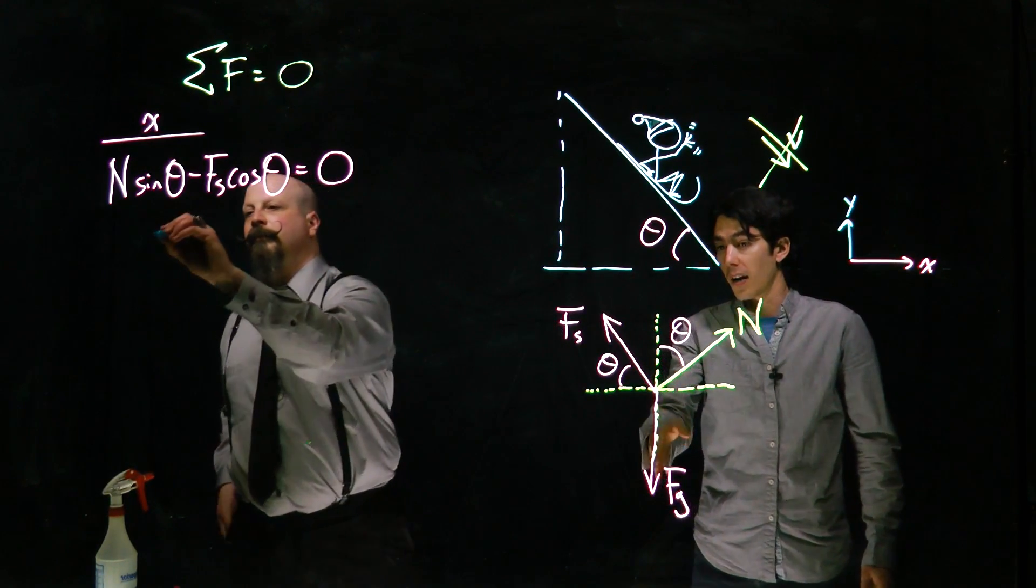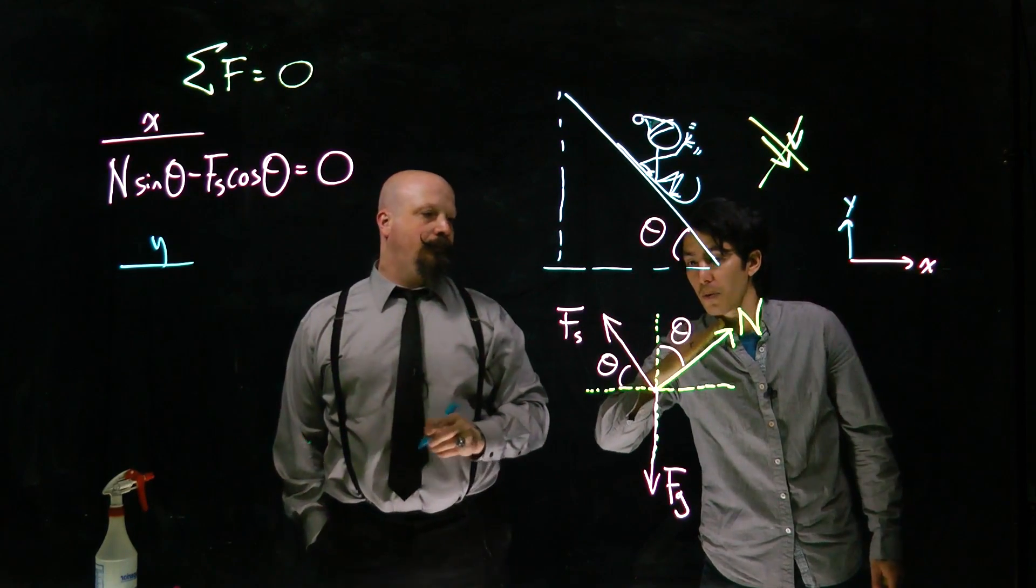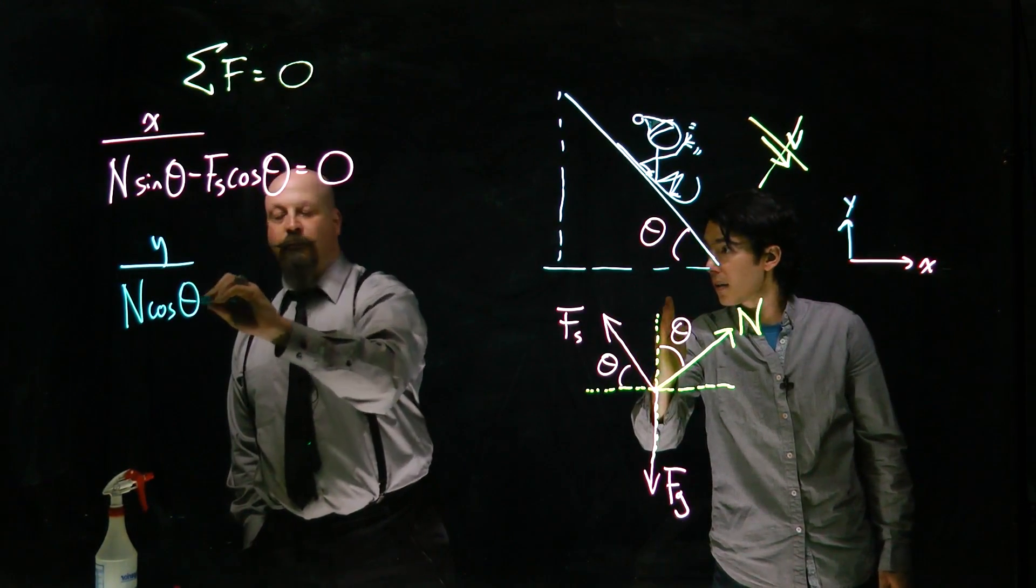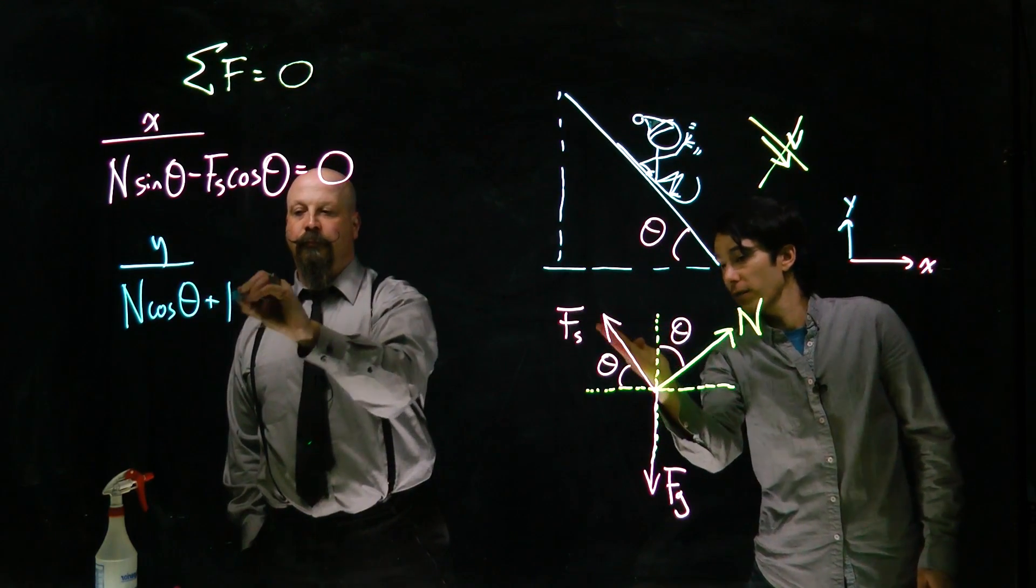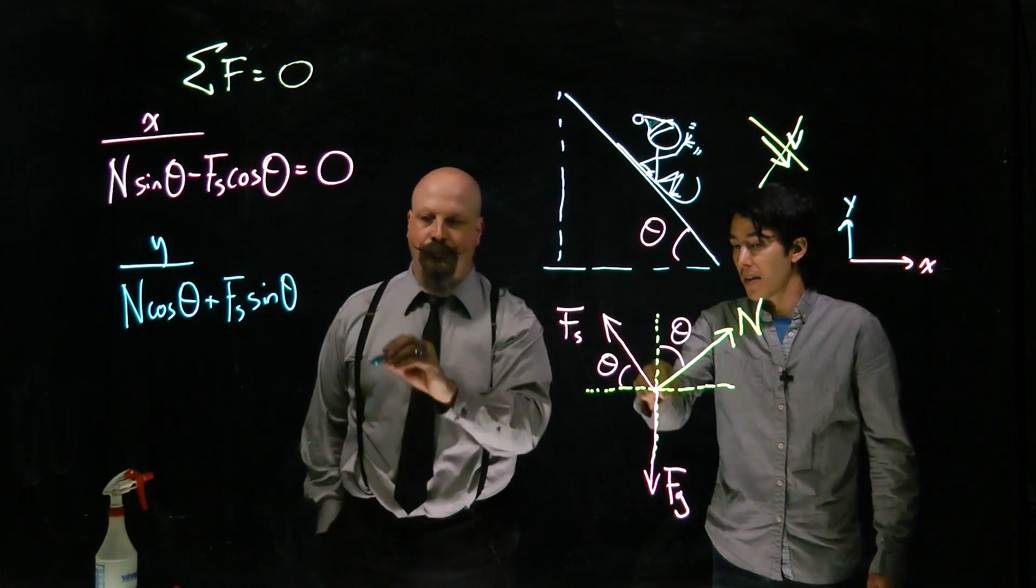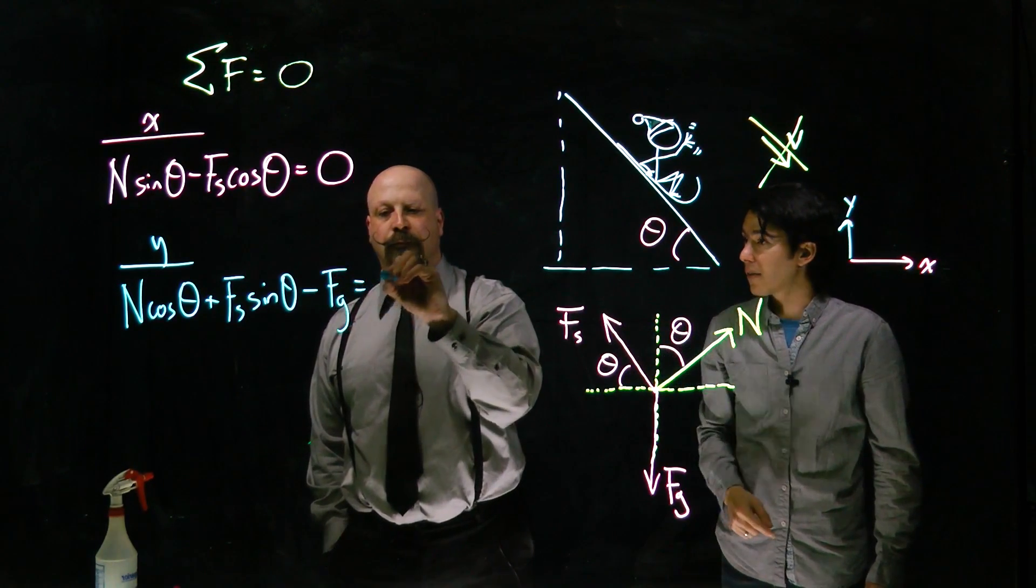In the y direction, we've got two upward forces. Normal force has a positive y component that we get by N times cos theta. Added to that, the friction force has a vertical component, F times sin theta, and those both work against the downward or negative force of gravity.